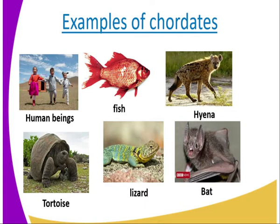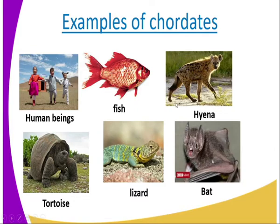Another characteristic is that the heart is ventrally located. The blood flows to the heart through veins that are ventrally placed, and it flows from the heart through dorsally placed arteries. Another characteristic is that they have a closed circulatory system. Another characteristic is that they have a post-anal tail — you can see from our diagram that they have a tail. For the case of a human being, it is rudimentary. Another characteristic is that they possess an internal skeleton.